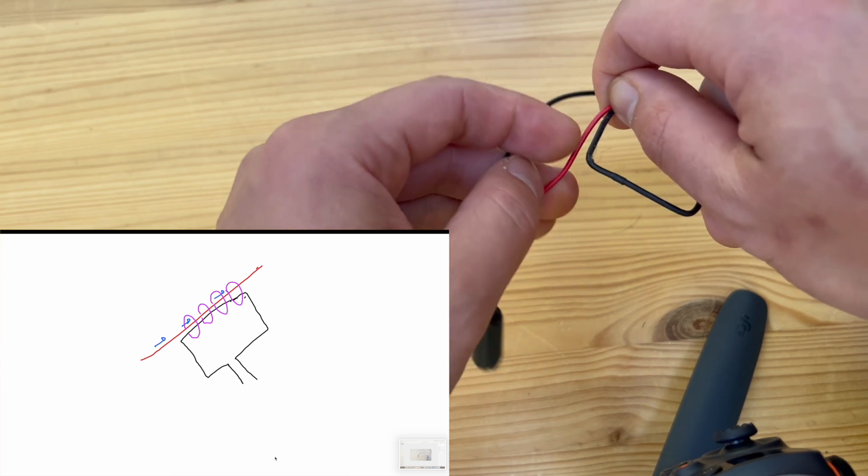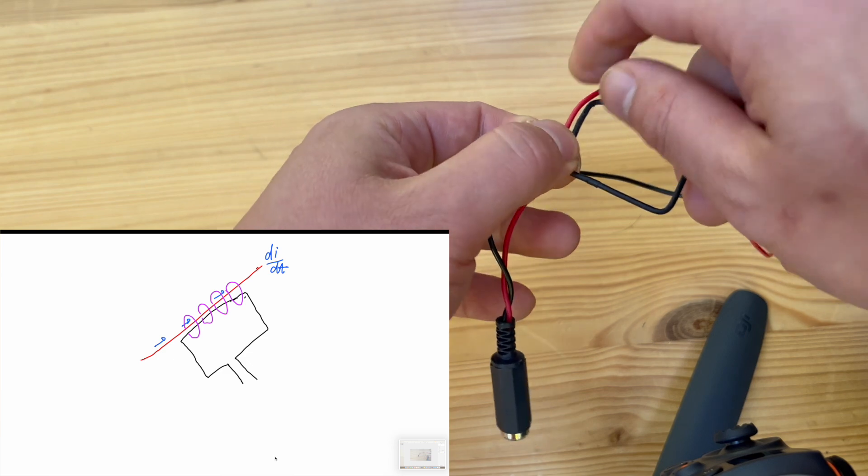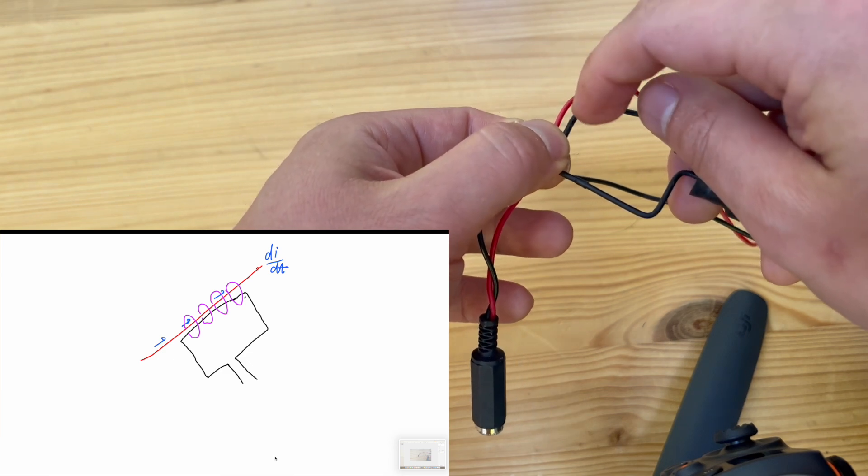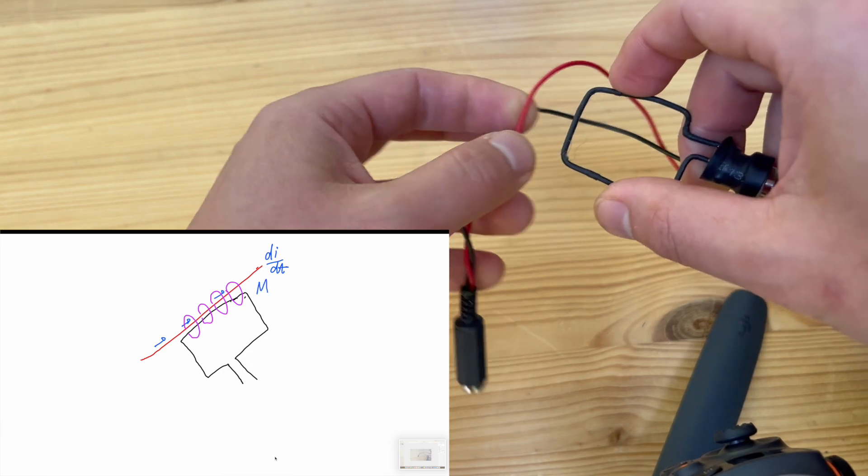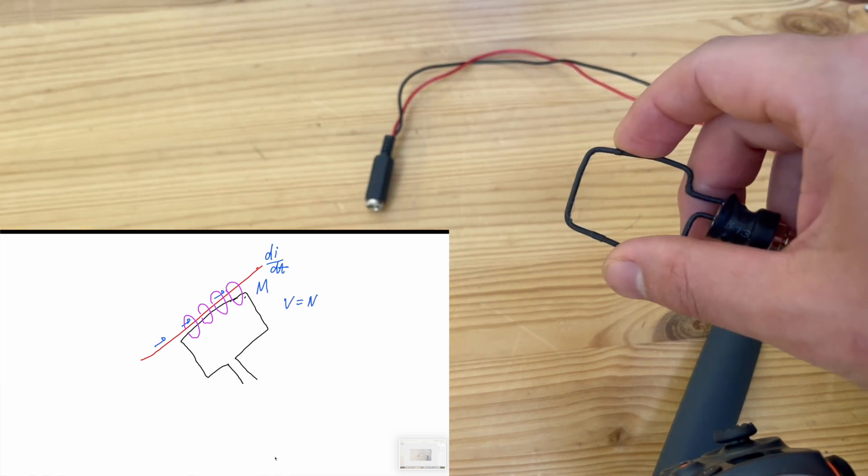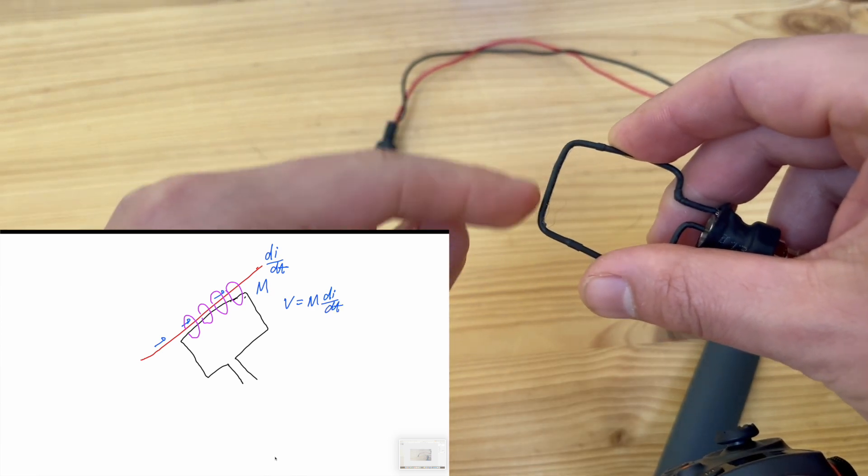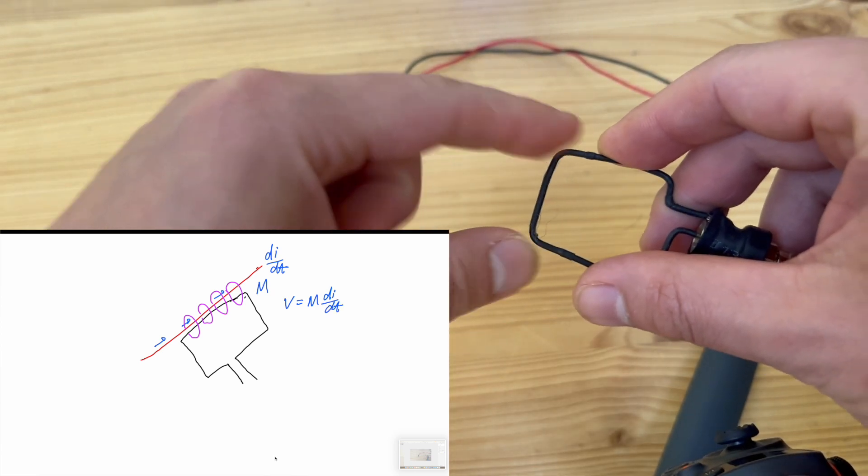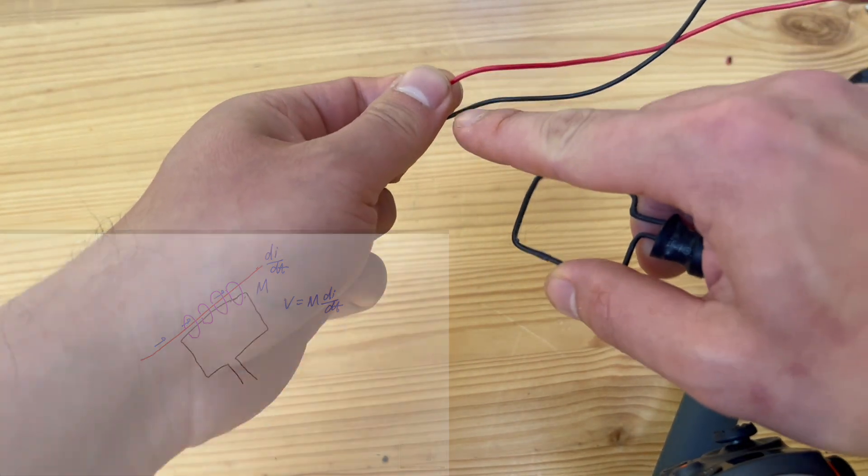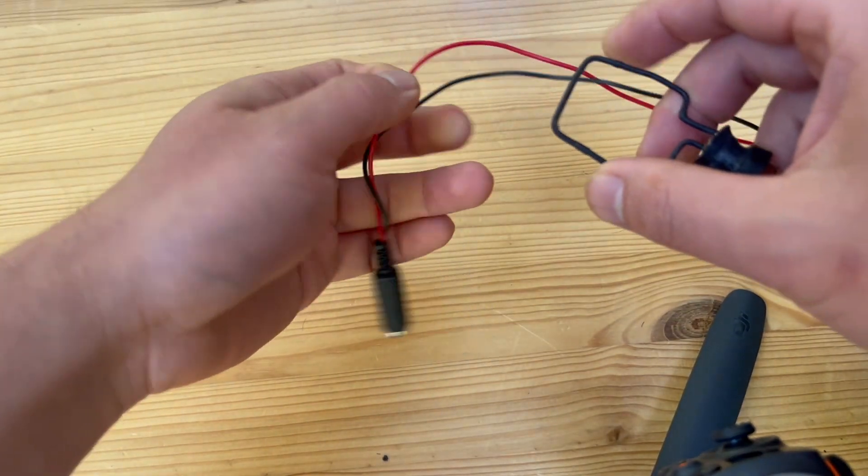As a result, you're going to develop a voltage across this bit of wire, and this voltage actually equals mutual inductance times dI/dt, and the dI/dt actually is the dI/dt going through this wire. So you induce a voltage here.